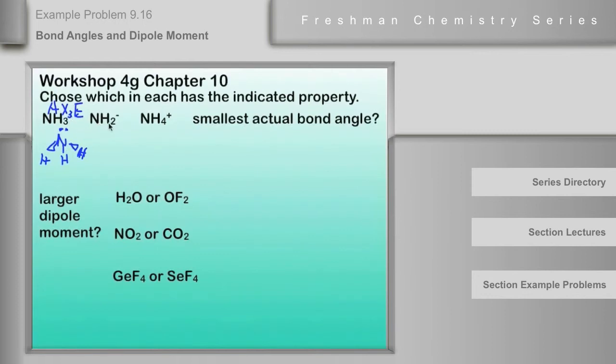Now, let's compare it with NH2 minus, and NH2 minus looks like this, the Lewis dot structure. It's got two lone pairs, and of course, this is a negative ion overall. So, the shape class for this one is AX2E2. These H's here are X's, the two lone pairs are the two E's.